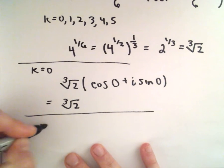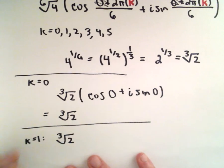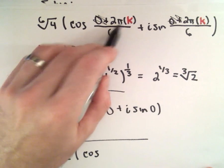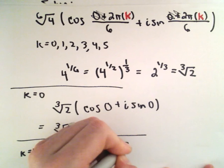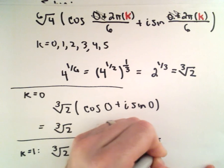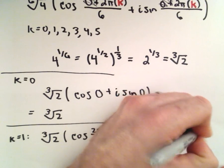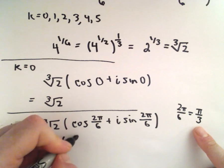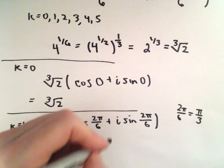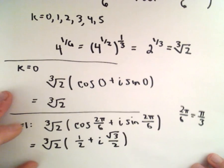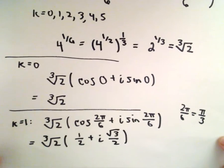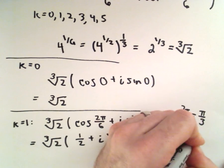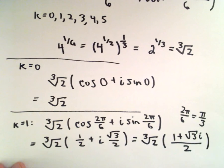If k equals 1, we'll have the cube root of 2 multiplied by cosine of 2 pi over 6, which simplifies to pi over 3, plus i times sine of pi over 3. Cosine of pi over 3 is 1/2 and sine of pi over 3 is root 3 over 2. So we can rewrite this as the cube root of 2 times the quantity 1 plus the square root of 3 times i, all over 2.